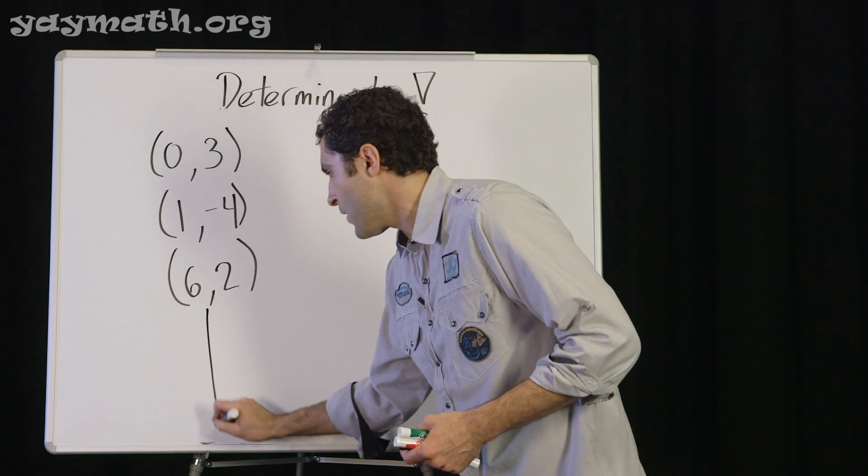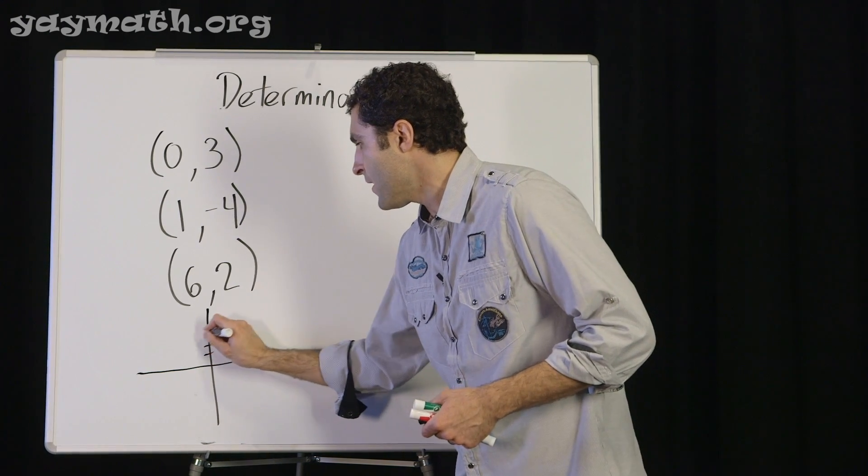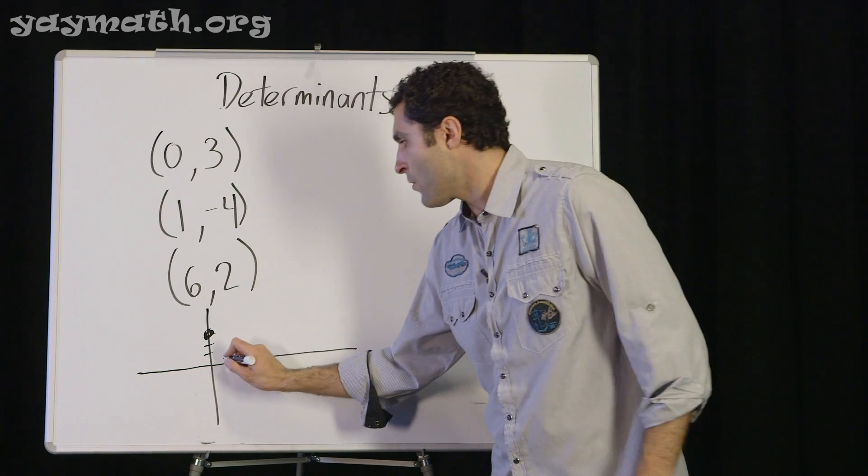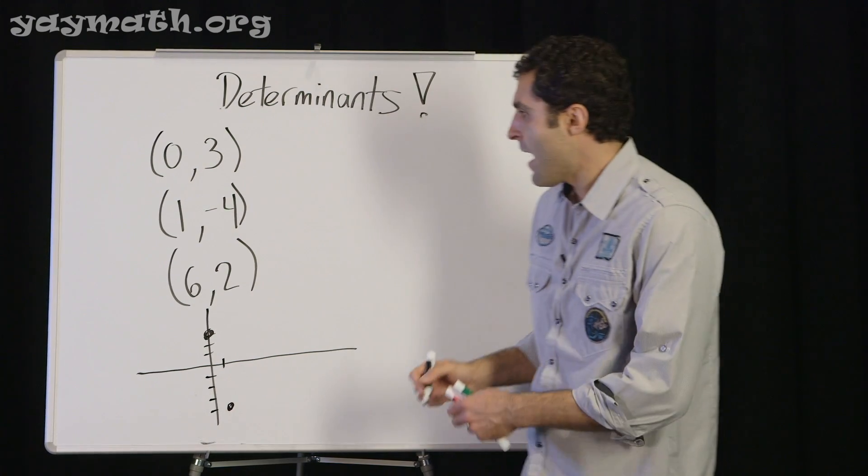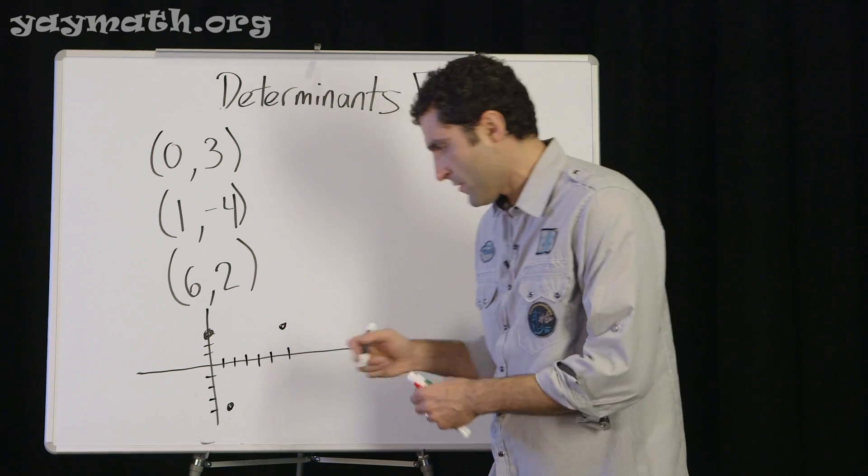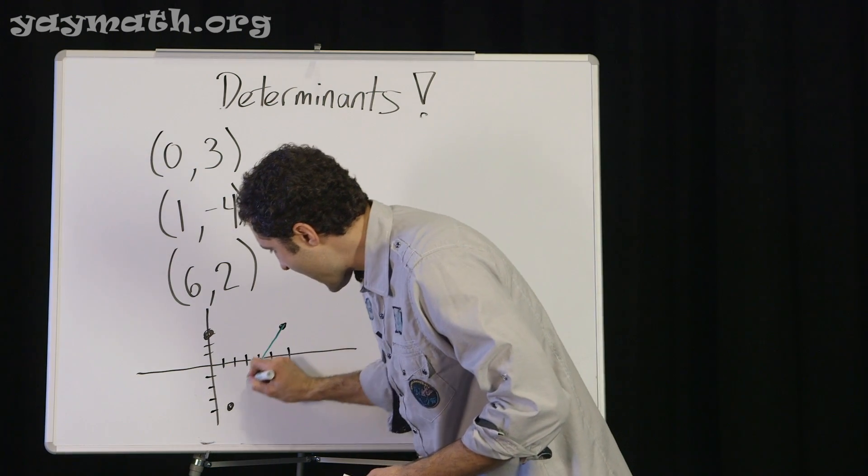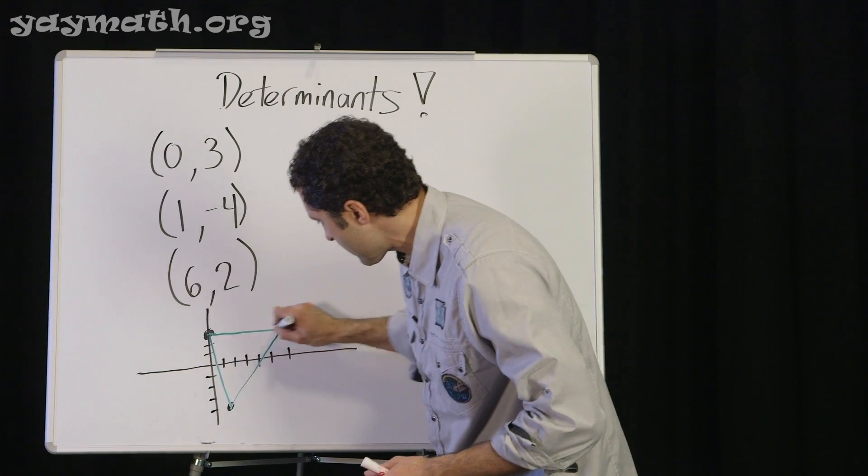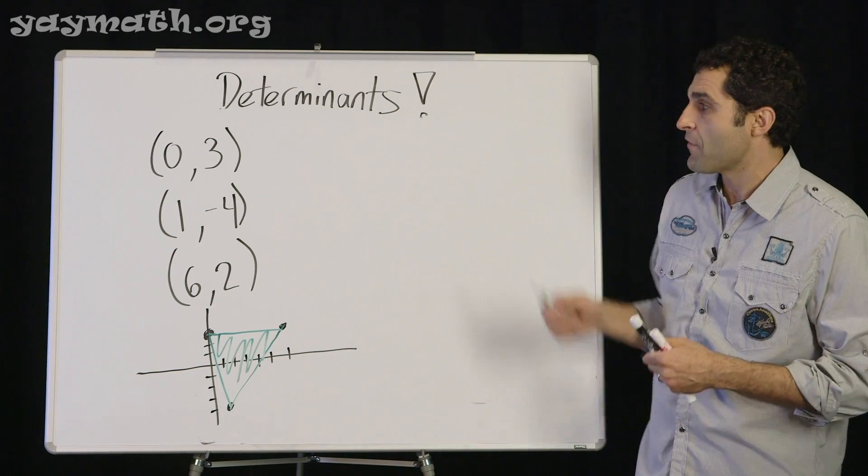If you just want to get a quick visual on what it would look like, something like this. 0, 3. 1, 2, 3, there. 1, negative, 4. 1, 2, 3, 4. Five. Six. 1, 2. See this random triangle? You don't have to know anything about it except three points.